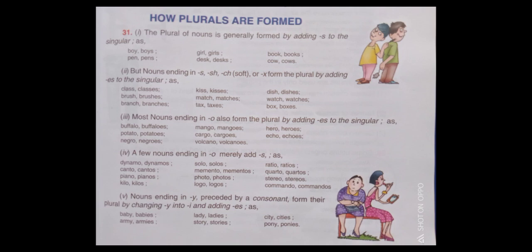But nouns ending in S, SH, CH, soft CH, X form the plural by adding ES to the singular, as: class, classes; brush, brushes; branch, branches; kiss, kisses; match, matches; text, texts; dish, dishes; watch, watches; box, boxes.